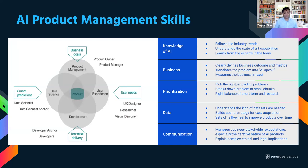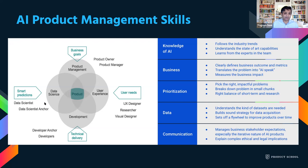Let's talk about what kind of skill set is needed for an AI product manager. We've all seen the typical Venn diagram: a product manager sits at the intersection of business, user experience, and software development. For AI, we'll add data science to this. You don't have to be a data scientist, but you have to be able to understand what they're doing, talk to them, and explain the business problem in language they can understand.